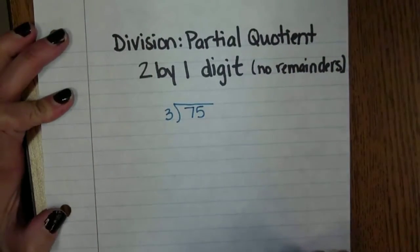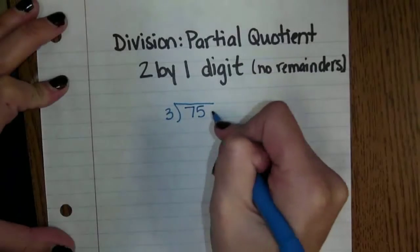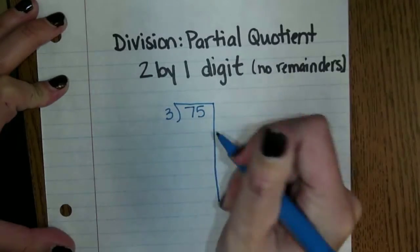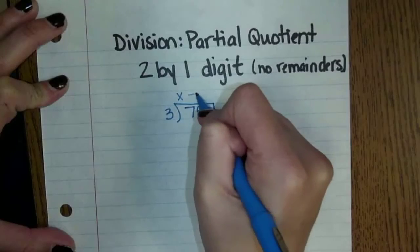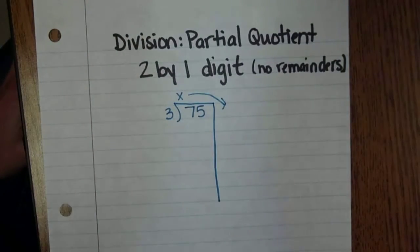Now what is interesting about this is that students can use facts that they are familiar with. To start this problem we are going to extend our line all the way down and we're going to put a multiplication sign and an arrow over here.